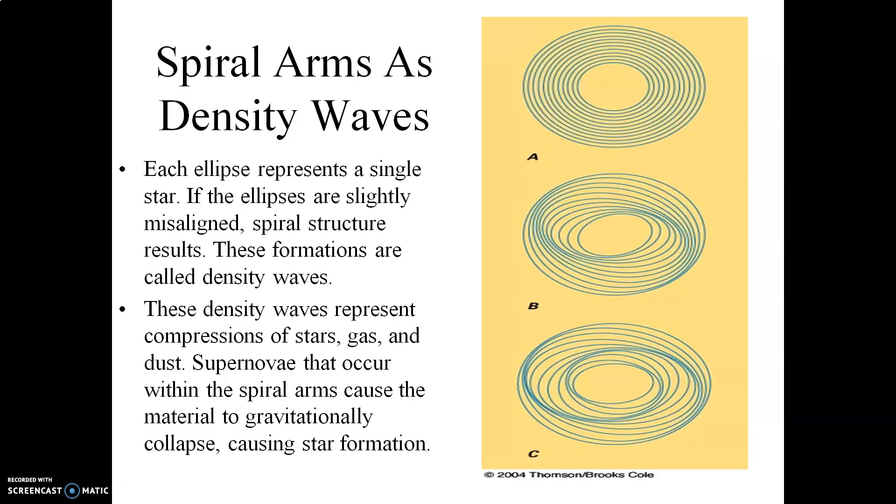Now the structure of spiral arms themselves within the disk of the galaxy. Why do spiral galaxies look the way they do? Well, the spiral arms are actually examples of what are referred to as density waves, and here's the basic idea as to how you can understand how they form. So take a look at the top portion of this slide here. You see elliptical orbits, for example, associated with individual stars or dust or gas about the galactic center.